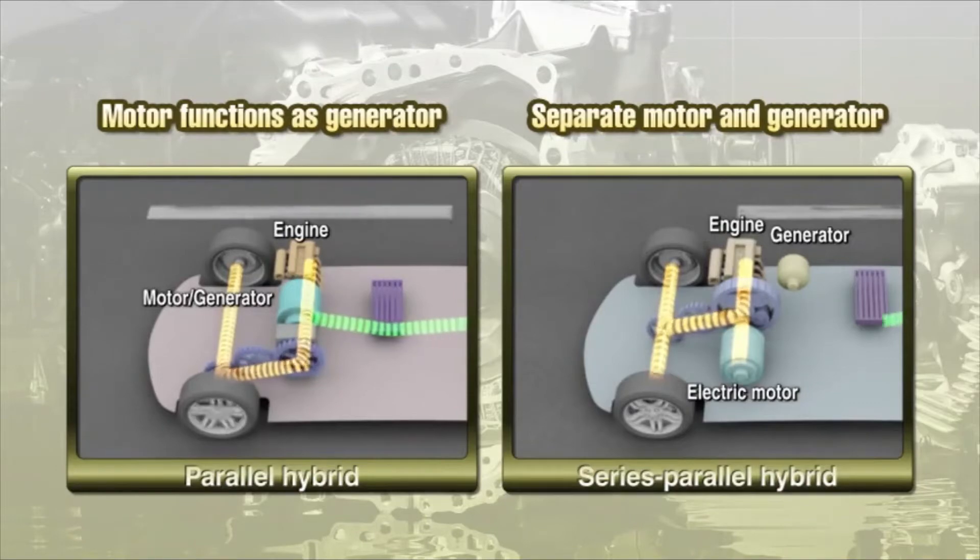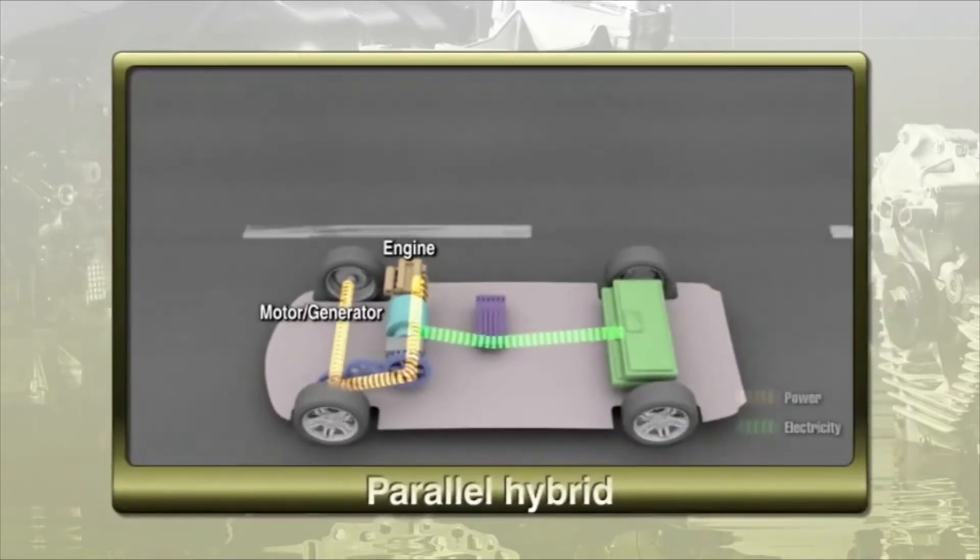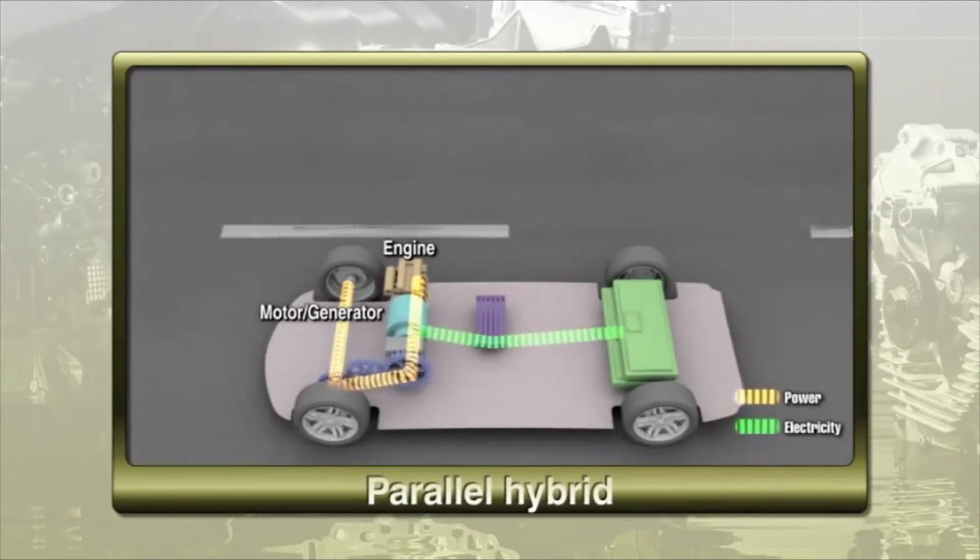An electric motor and a generator share a similar basic structure. In a parallel hybrid, the drive motor functions as regenerative brakes, producing energy during deceleration.